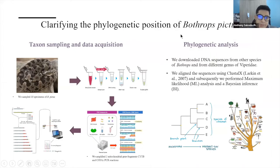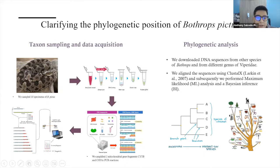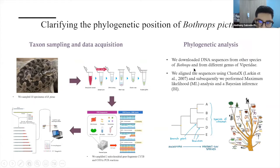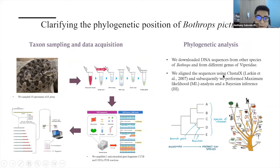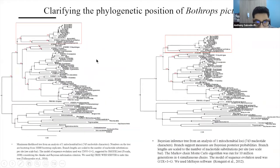In order to clarify the phylogenetic position of Bothrops pictus, we sampled 10 specimens, extracted DNA using a commercial DNA kit, and amplified two mitochondrial gene fragments: cytochrome b (cyt b) and cytochrome oxidase subunit I (COI) by PCR reactions. We then sequenced and purified the amplicons. Afterwards, we downloaded DNA sequences from other species of Bothrops sensu lato and stricto, and from different genera of Viperidae, aligned sequences using ClustalX, and performed maximum likelihood and Bayesian inference analyses.